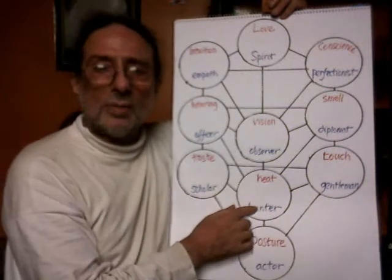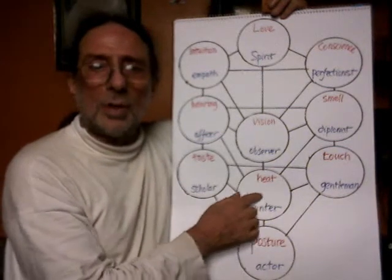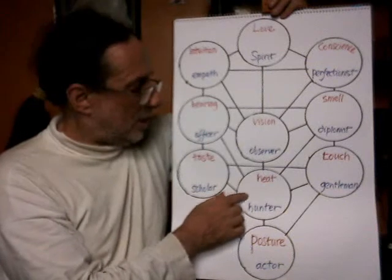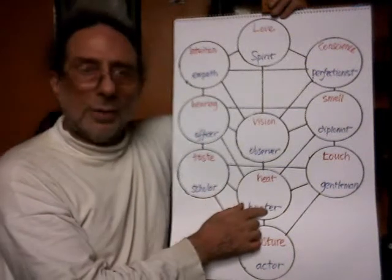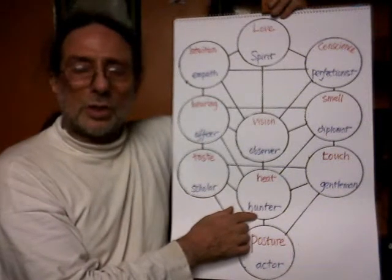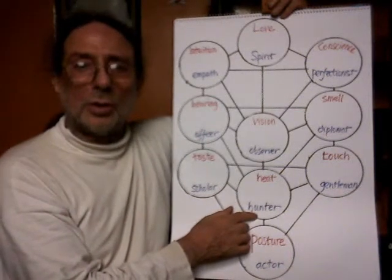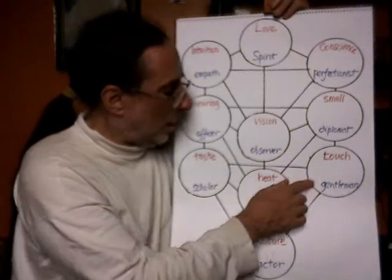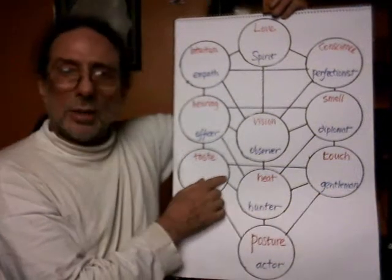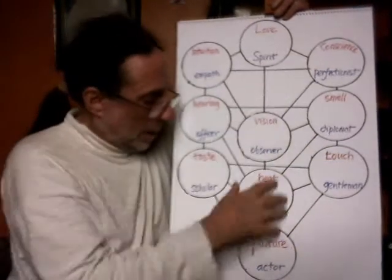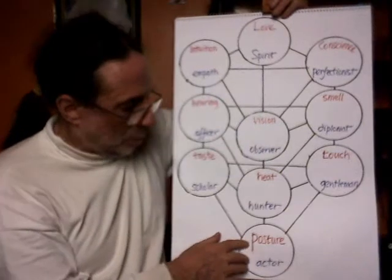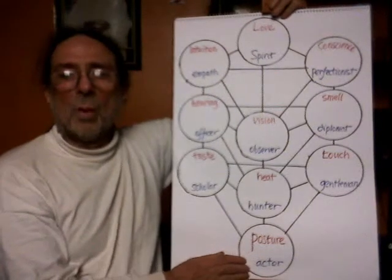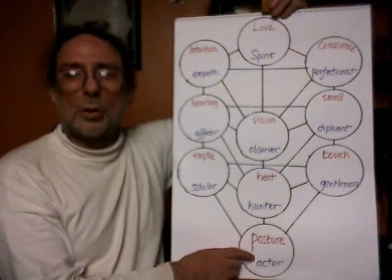Then we've got the heat sensitivity — number eight, the flame, the heat sensitivity, and the hunter. The questioning, seeking things out, which can be fuel here, or it can be seeking the object, all of which goes down to construct, to position. Here we have the posture and the actor.